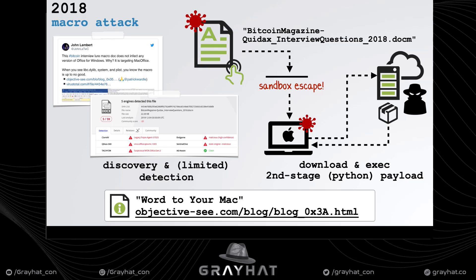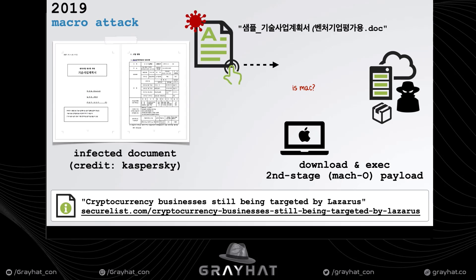In 2019, we have a document from the prolific Lazarus Group, generally attributed to North Korea. The most interesting thing about this attack is seeing that APT groups are jumping on the 'let's target macOS via macros' bandwagon. Again, user opens a document, clicks to enable macros, and the system will be infected.